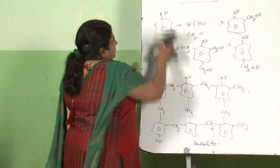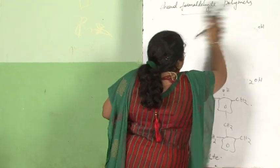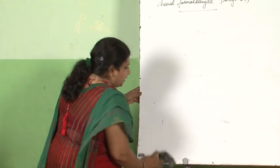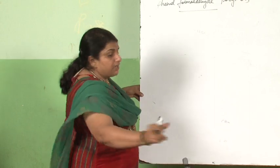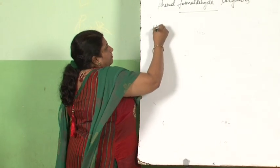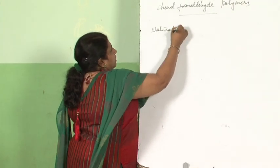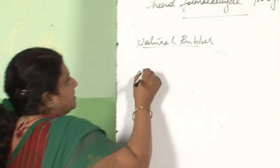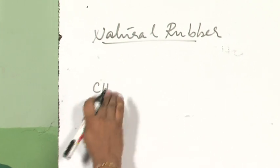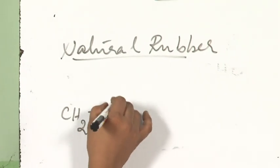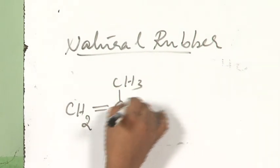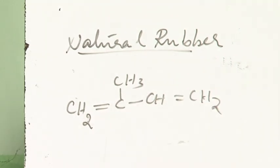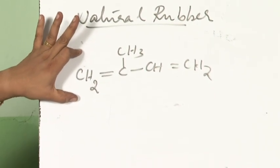The last one in this category is rubbers. Natural rubber — you are familiar with it. The monomer of natural rubber is isoprene: CH2 double bond, CCH3, CH double bond CH2. It can be written in cis and trans forms.